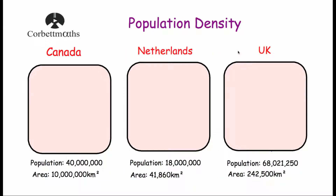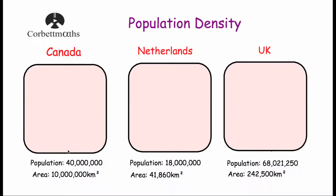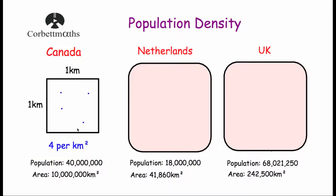Let's have a look at three countries: Canada, the Netherlands, and the United Kingdom. Each of these values for population and area is approximate. Canada has a population of 40 million and an area of 10 million kilometres squared. If we divided Canada into 10 million kilometre squares and shared 40 million people equally, we'd find four people in each square — so the population density of Canada is four per kilometre squared.